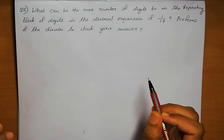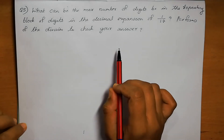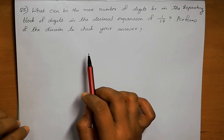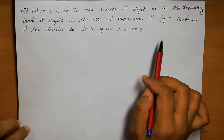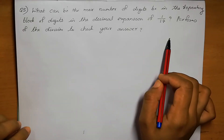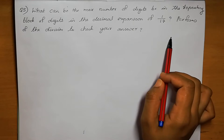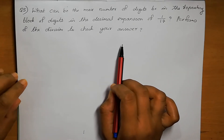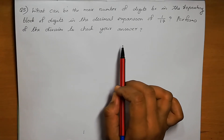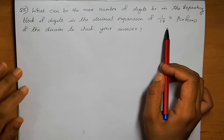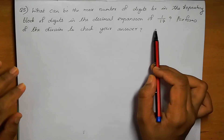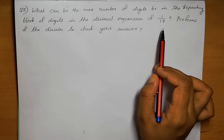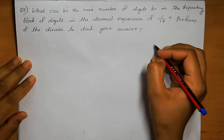Question number 5: What can be the maximum number of digits in the repeating block of digits in the decimal expansion of 1 by 17? Perform division to check your answer. First we can do the division, then we can check how many digits are there in the decimal expansion.